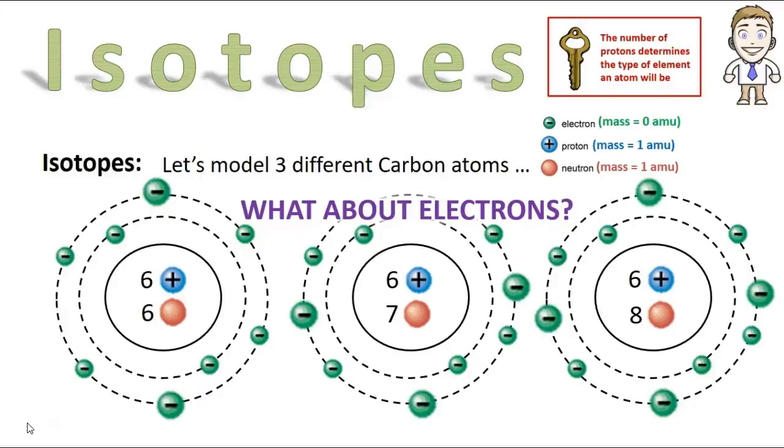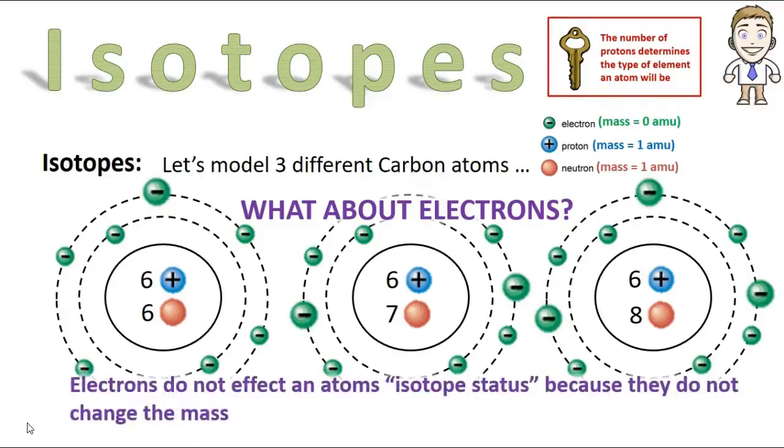Before you get too concerned, there's some good news, and that is that the electrons don't matter at all. Electrons do not affect an atom's isotope status because they don't change its mass. Remember, electrons are so small, they have pretty much no mass at all, zero AMUs, so you can put in as many as you want, and it doesn't affect these atoms being isotopes of one another.